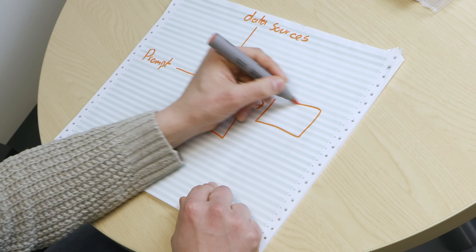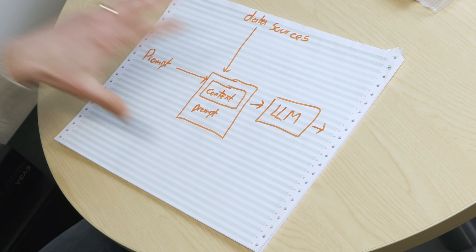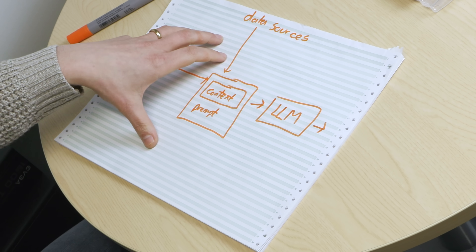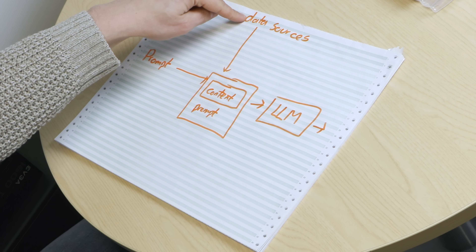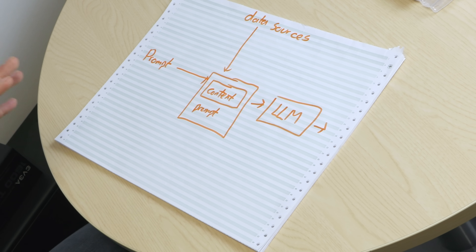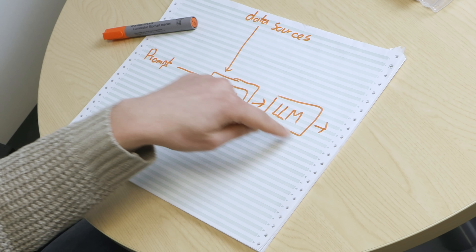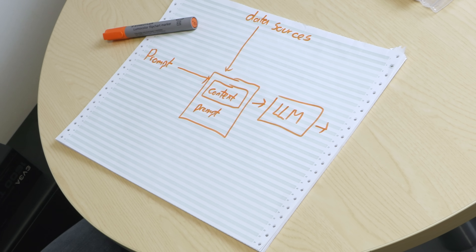This goes into a large language model and gives you your output. It works pretty well — it's a much better way of using an LLM if you want accurate information, since they're good at paraphrasing if your data sources are good. What indirect prompt injection is, is getting something into that data source so that later it gets put into someone's prompt and used. So let's give a few examples of the kinds of systems that could be vulnerable to something like this.